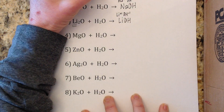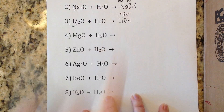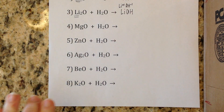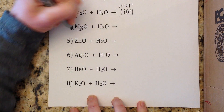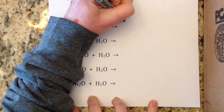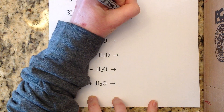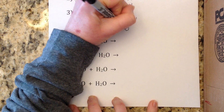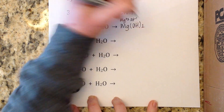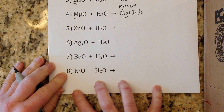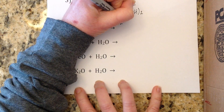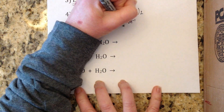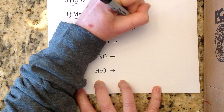Number four: magnesium oxide and water. The metal is magnesium, Mg²⁺. Hydroxide is OH⁻¹, so you get Mg(OH)₂. Number five: zinc oxide with water. Zinc is the metal — remember zinc is an exception and is always plus two. Crisscross zinc with hydroxide and you get Zn(OH)₂.